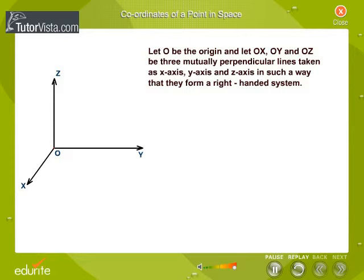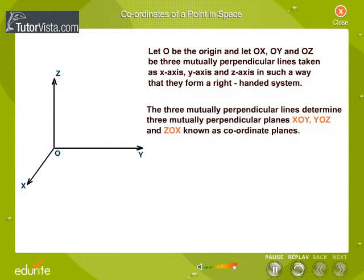In such a way that they form a right-handed system, the three mutually perpendicular lines determine three mutually perpendicular planes: XOY, YOZ and ZOX, known as coordinate planes.